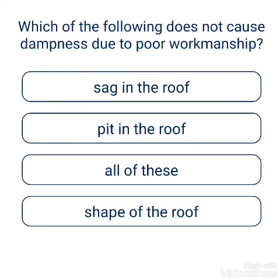Question: Which of the following does not cause dampness due to poor workmanship? Options: sag in the roof, heat in the roof, shape of the roof, all of this. The answer is shape of the roof.